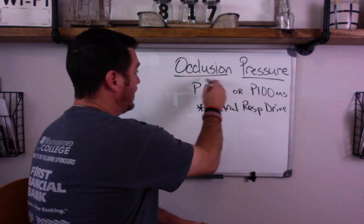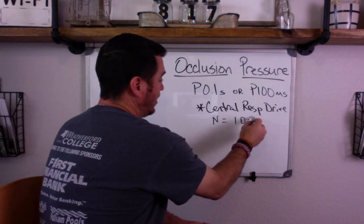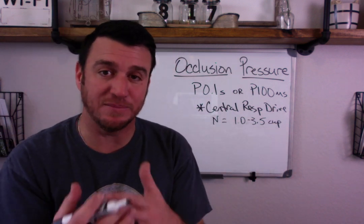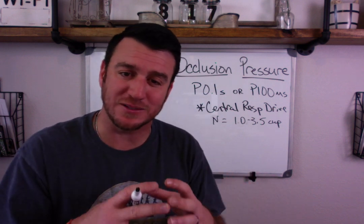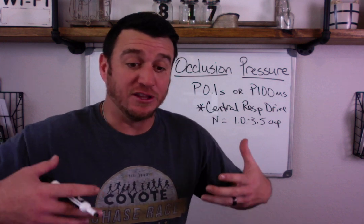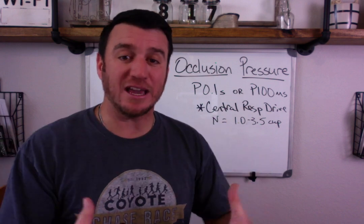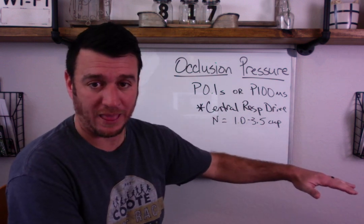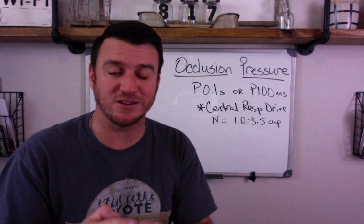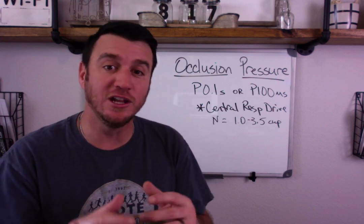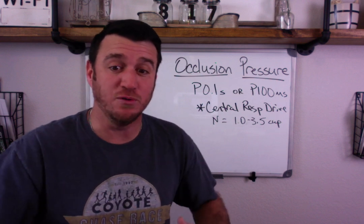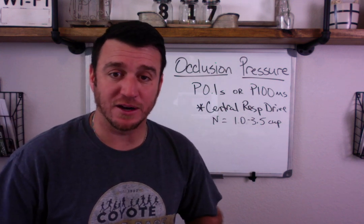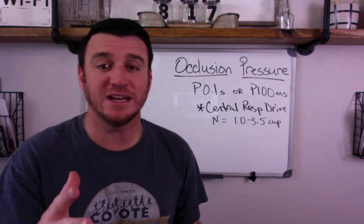Normal values for the occlusion pressure are approximately 1 up to approximately 3.5 centimeters of water pressure, and these are negative numbers because we're talking about inspiratory pressures. The diaphragm drops, the respiratory muscles contract, and you get a creation of negative intrathoracic pressure. These are similar to the MIP or NIF, except that with maximum inspiratory pressure, you're looking at conscious efforts — telling the patient to suck in as hard as they can to see how much negative pull they can generate.